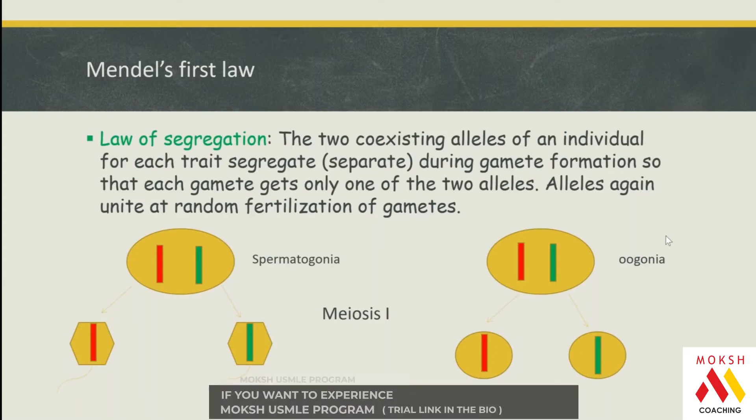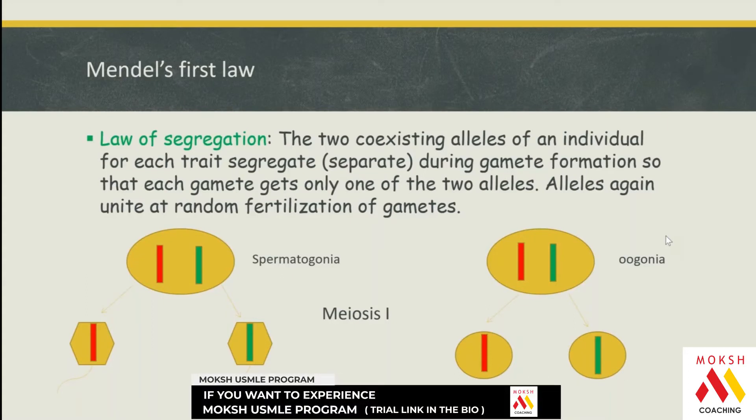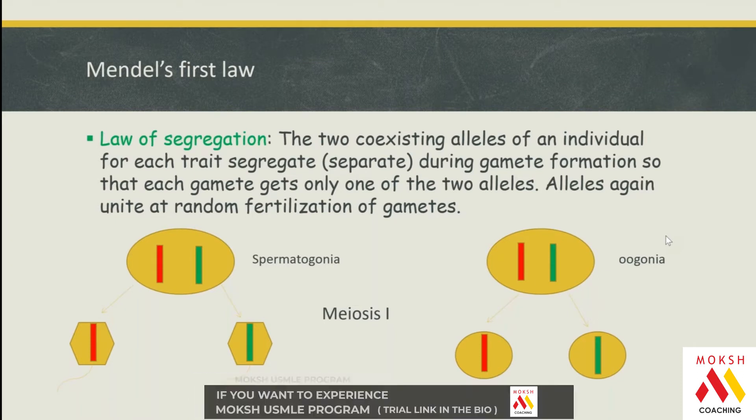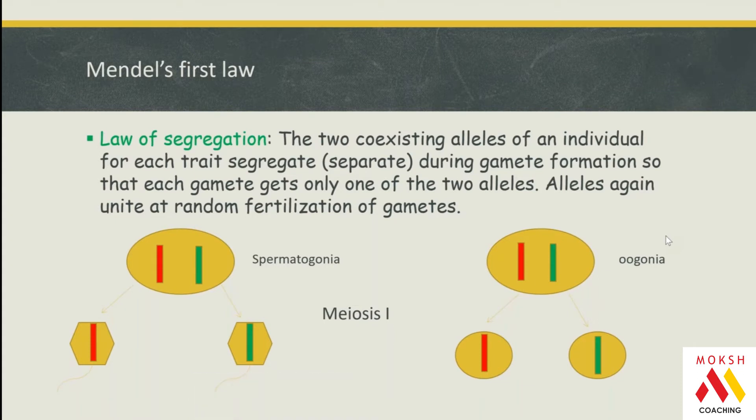The first law is called the law of segregation. We all know that two coexisting alleles for a particular locus—one from the paternal, one from the maternal—when your cells divide in meiosis, mainly in the germ cells, in the male spermatogonia and female oogonia, what happens?